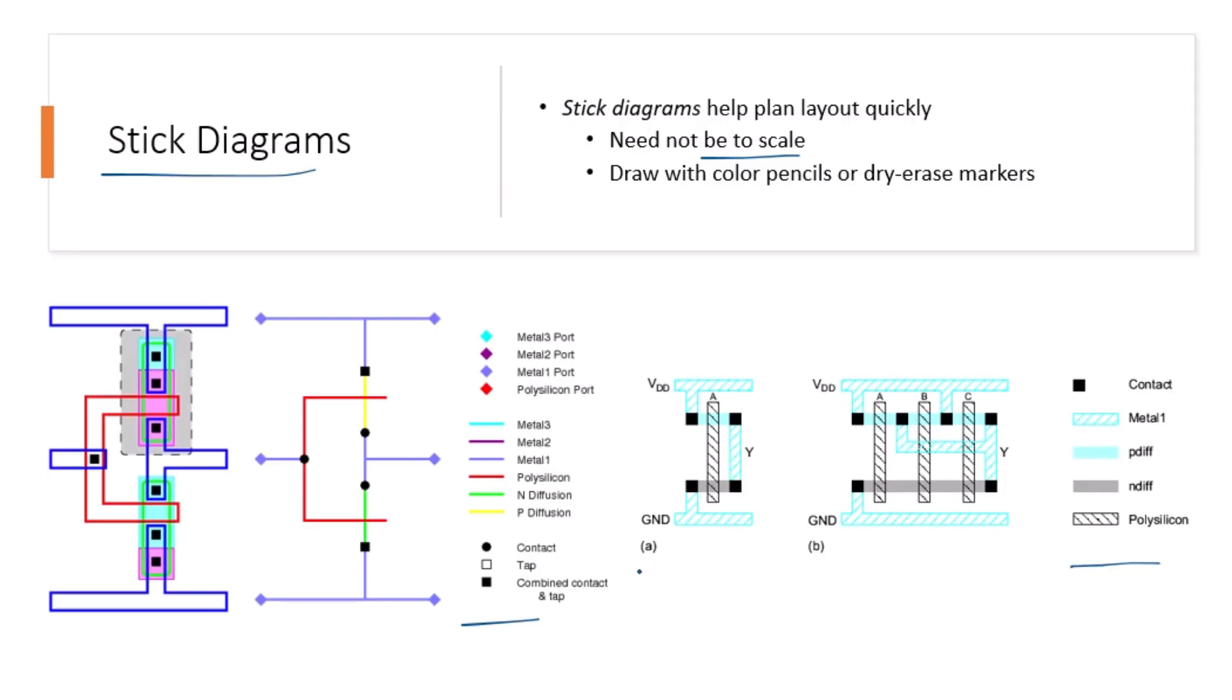Different designs or different colors represent different layers like polysilicon, diffusion, and metal. The vertical lines represent the gates, while horizontal lines represent the diffusion or metal layers. While stick diagrams aren't drawn to scale, they are an excellent tool for quickly planning out the arrangement of transistors and connections.